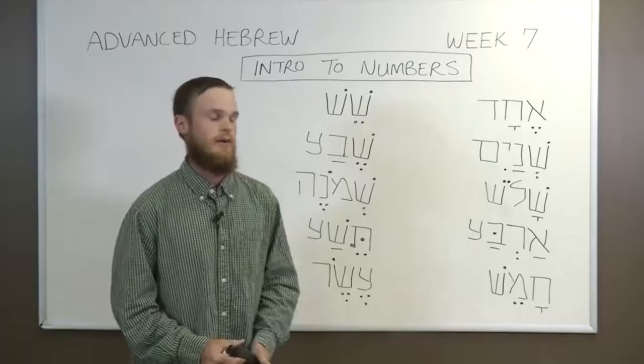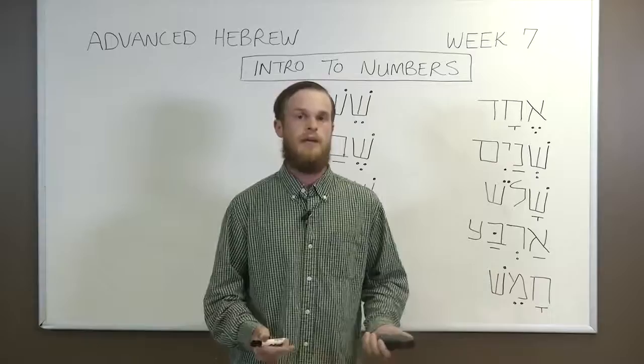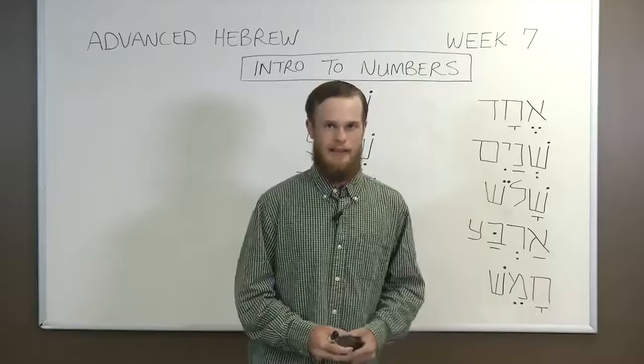There are two kinds of numbers: cardinal numbers and ordinal numbers. Cardinal numbers are the first topic we will cover, and they basically represent a quantity — one, two, three, four, five, et cetera. Five ducks, four geese, three kibbutzes, whatever the case may be.